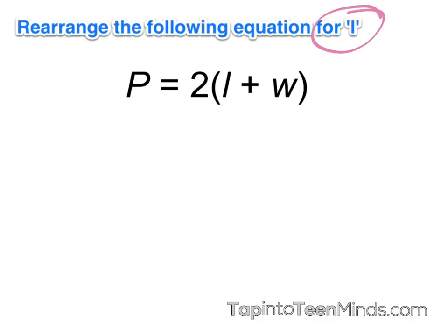There's a couple different ways we can do this. We could distribute the 2 into the brackets to eliminate the bracket, or we could also consider the fact that the 2 is multiplied by the bracket, and we can do the opposite by dividing out the 2.